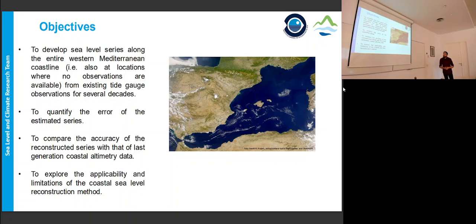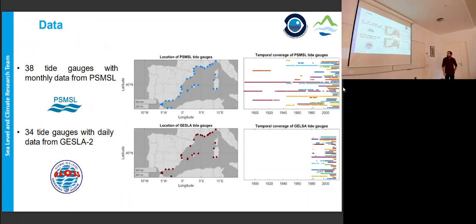Let's set the objectives. We want to develop a sea level series on the entire western Mediterranean, in locations where there are no observations from existing tide gauges for several decades. We want to quantify the error of the estimated series, to compare the accuracy with that of last-generation coastal altimetry, and to explore the possible applicability and limitation of this reconstruction. Here I show you the tide gauges we use. We have 38 tide gauges with monthly data from the Permanent Service of Mean Sea Level, which is an international database, and 34 tide gauges with daily data from GESLA-2. On the maps we can see the location of the tide gauges and the temporal coverage.